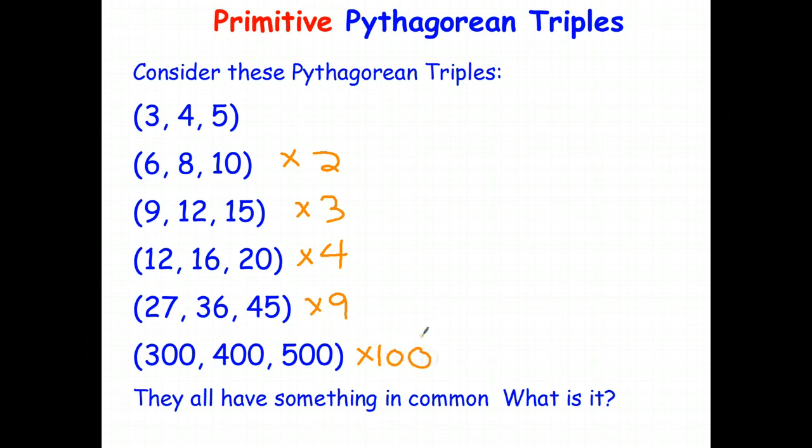So one thing that this tells you straight away is that there has to be an infinite number of Pythagorean triples, because once you have one of them, 3, 4, 5, you can just multiply those three numbers by any natural number and you get a new one. So 3, 4, 5 is considered to be a primitive Pythagorean triple because it can't be simplified.